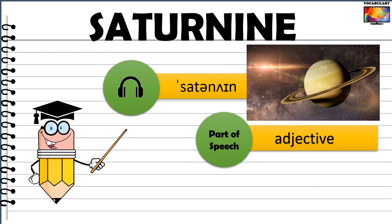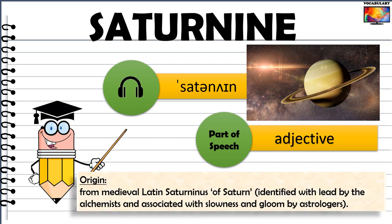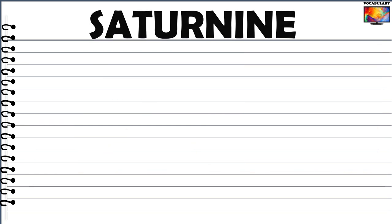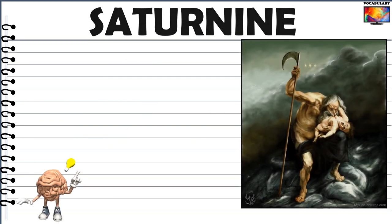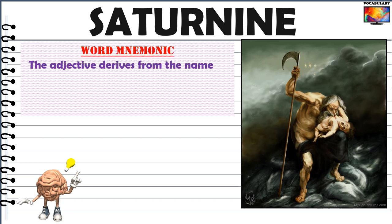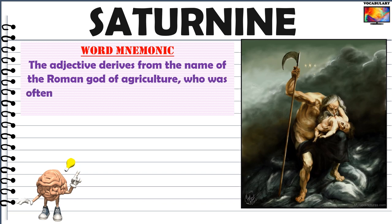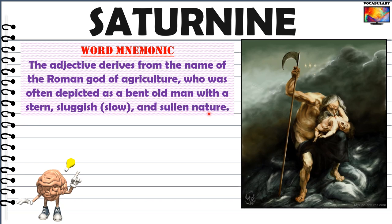Saturnine is our next word, which is again an adjective. The word is closely related to Saturn, one of the planets of our solar system, which astrologers believe is associated with slowness and gloom. The name of the planet was derived from the Roman god of agriculture, often depicted as a bent old man with a stern, sluggish, and sullen nature. According to a myth, this god Saturn, fearing he would be overthrown by one of his children, ate each one of them upon their birth — this is depicted in a very famous painting.